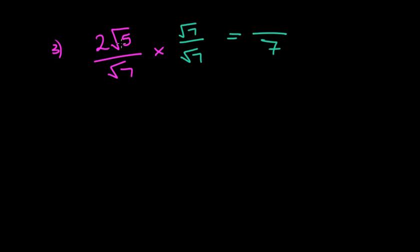Now 2 root 5 times root 7 makes 2 root 35, because 5 times 7 is 35. Can I simplify that surd any further? Well, the only numbers going into 35 are 5 and 7. We can't make a square number out of that, so that is simply our answer. It's fine because we have made the denominator a rational number.